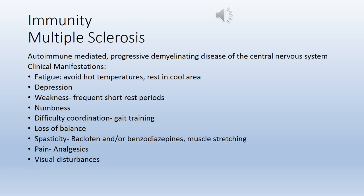Clinical manifestations of multiple sclerosis include fatigue — patients should avoid hot temperatures and rest in cool areas. Depression, weakness — patients should have frequent short rest periods. Numbness, difficulty in coordination requiring gait training, loss of balance, and spasticity — managed with baclofen and/or benzodiazepines, as well as muscle stretching. Patients can also have pain managed with analgesics, and visual disturbances.